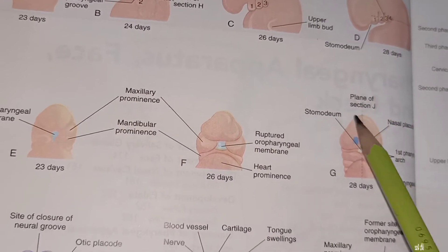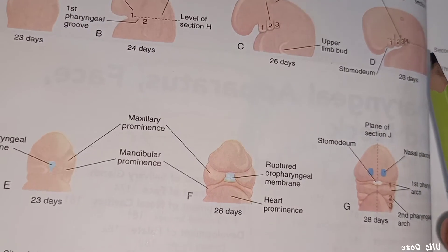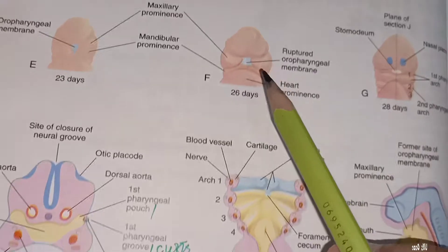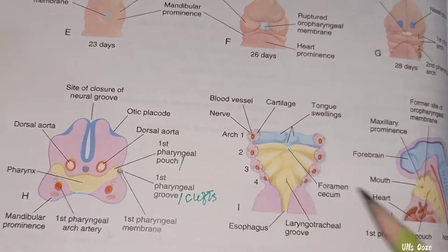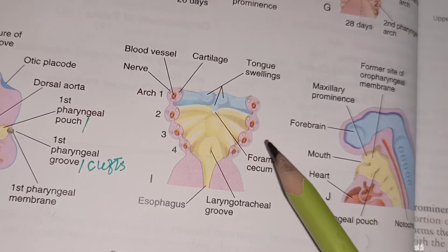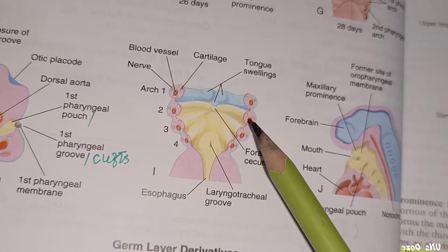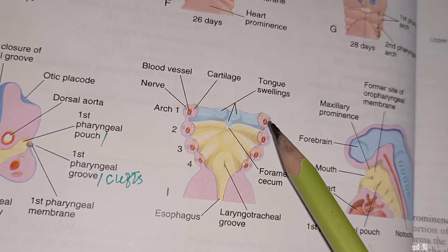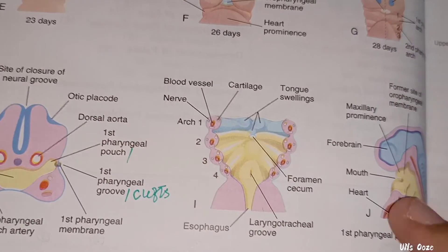So this is the pharyngeal apparatus. You can see it basically here — this is the pharyngeal apparatus, which we will discuss.